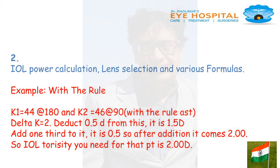Example: K1 is 44 at 180 and K2 is 46 at 90 — this is with-the-rule astigmatism. Delta K is 2. Deduct half from this: it is 1.5D. Add one third to it: that is 0.5. So after addition it comes to 2.00D. Therefore, the toricity needed for that particular patient is 2 diopters.